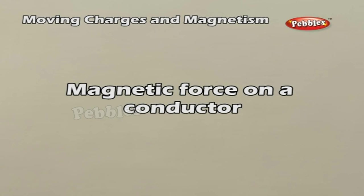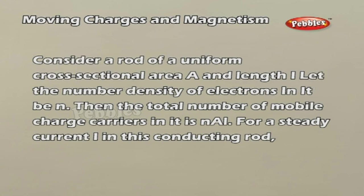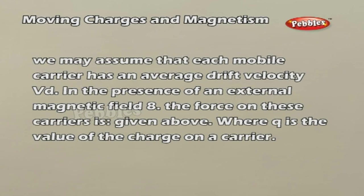Magnetic force on a conductor. Consider a rod of uniform cross-sectional area A and length L. Let the number density for electrons in it be N. Then the total number of mobile charge carriers in it is N·A·L. For a steady current I in this conducting rod, we may assume that each mobile carrier has an average drift velocity Vd. In the presence of an external magnetic field B, the force on these carriers is given above.